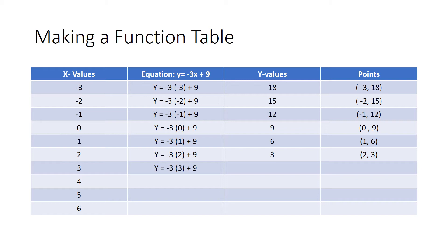In the seventh row I have an x value of three, so my equation is negative three times three plus nine. I type that in the calculator and get an answer of zero. I take my x value three and my y value zero and put it into the points column as three, zero.